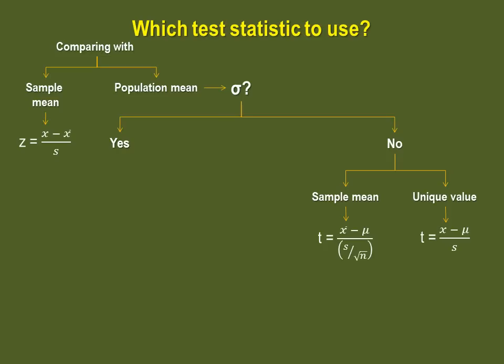On the other hand, if you do have the standard deviation for the population, and you are comparing a unique value to the population mean, then this is how you calculate your Z score.